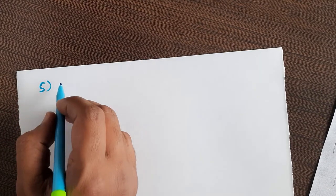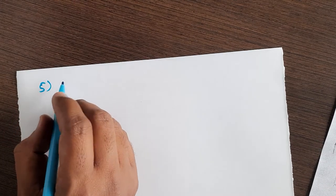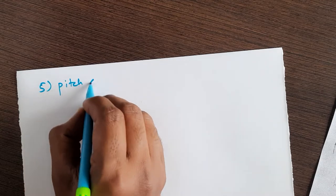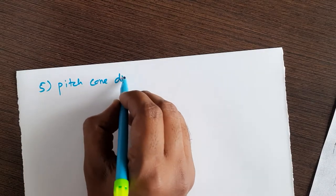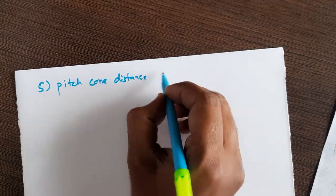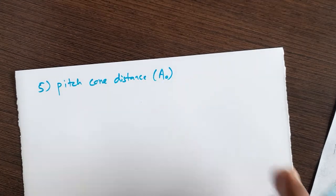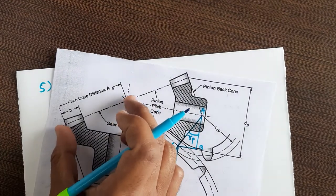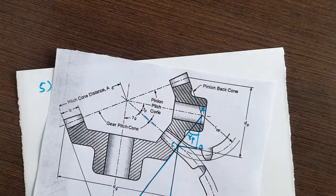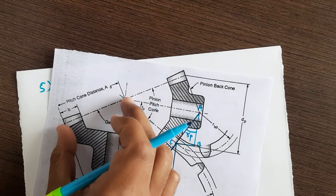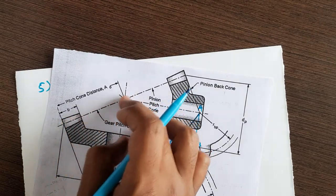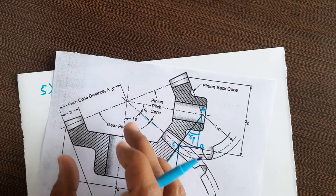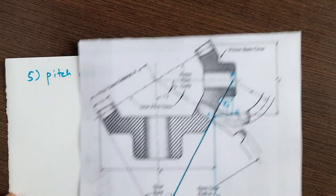The next terminology we will use for bevel gear is pitch cone distance, denoted by A0. Pitch cone distance is nothing but the length of pitch cone elements, and you can find this by the Pythagoras theorem.